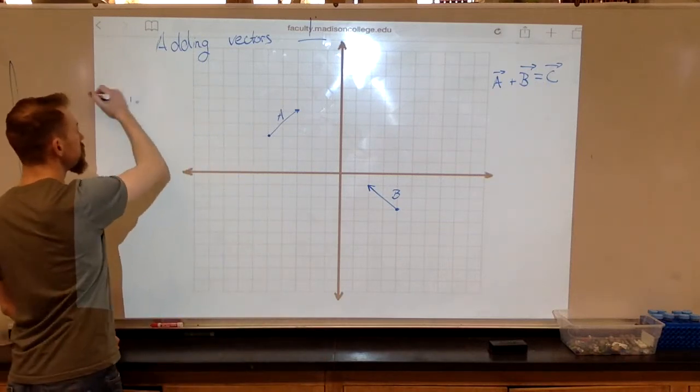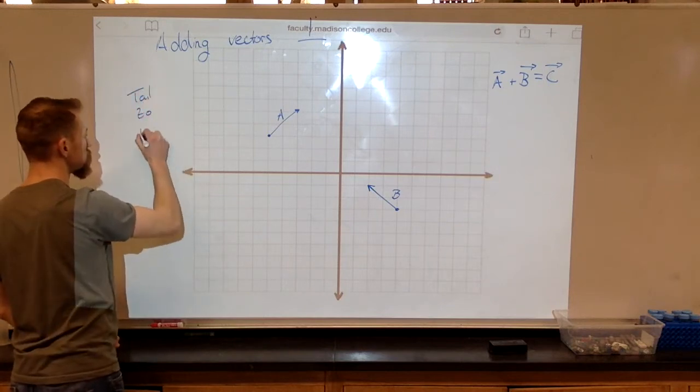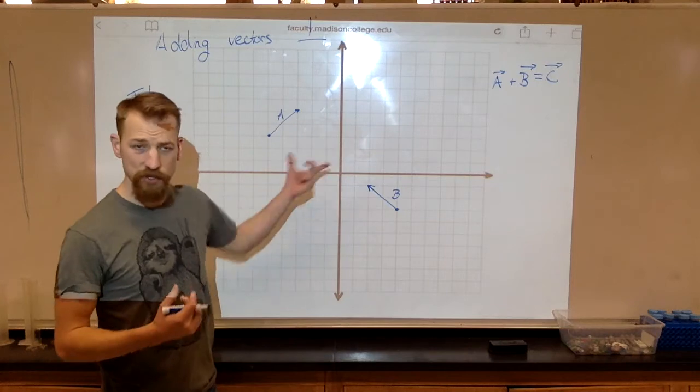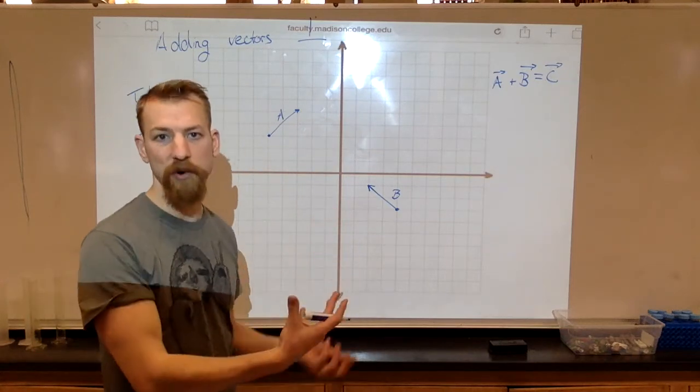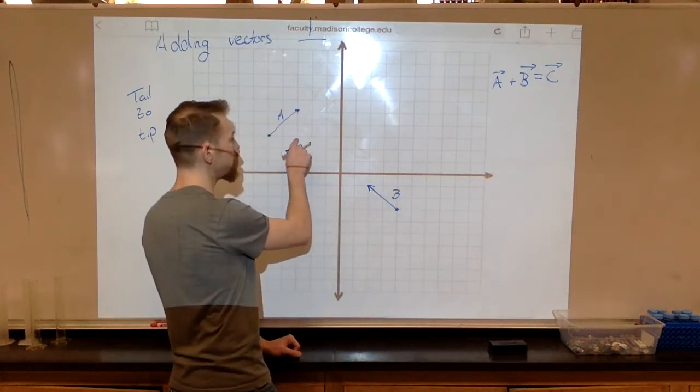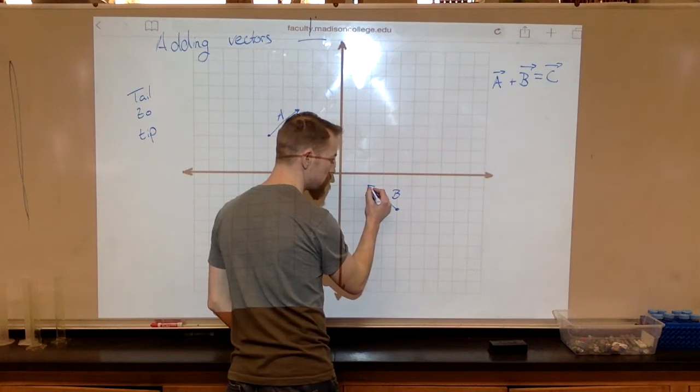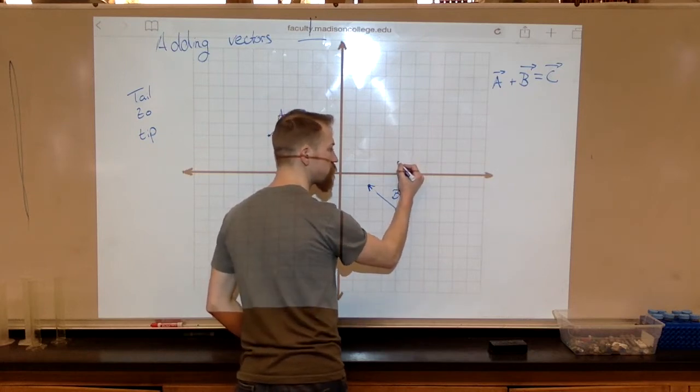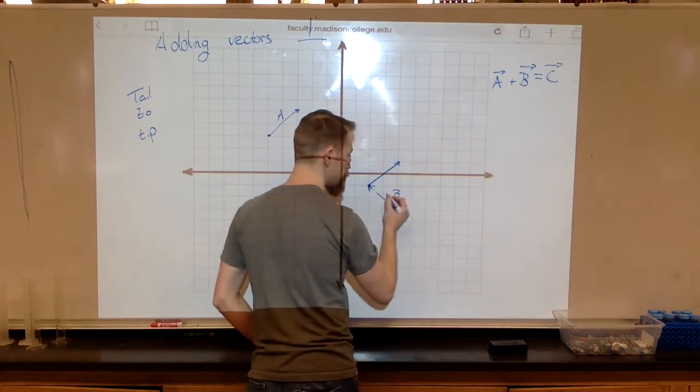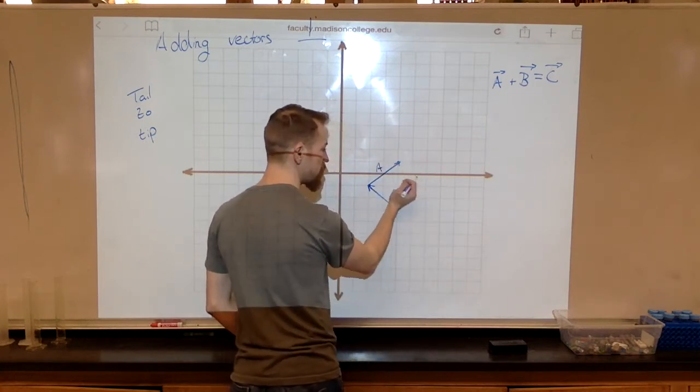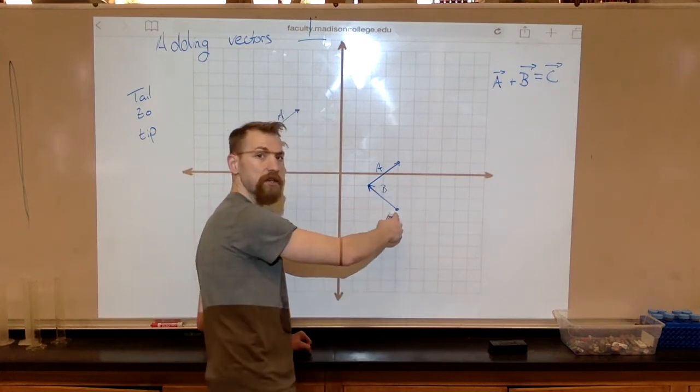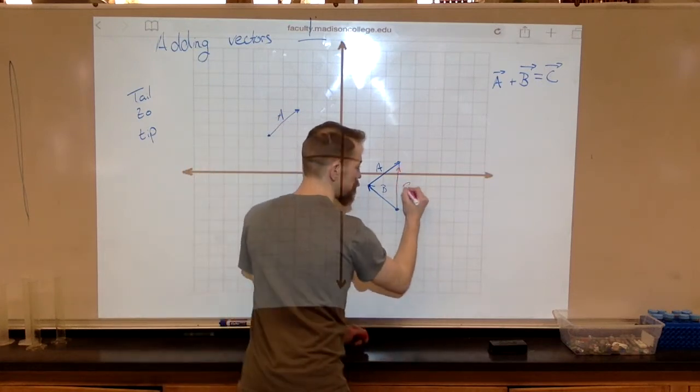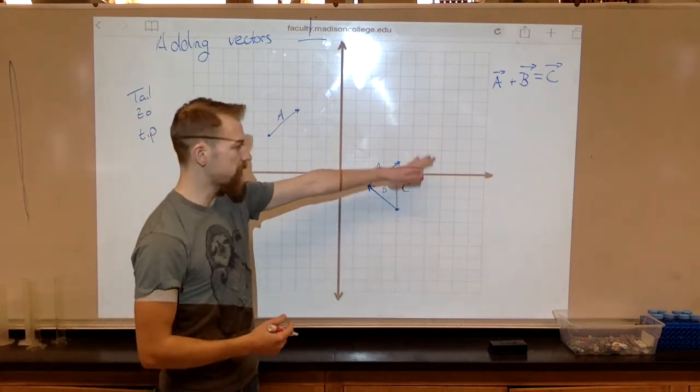And I can move these vectors anywhere. So let's use the tail-to-tip method. And I'm going to again move A to B. It doesn't matter which vectors I move. So here, this is over two, up two, so this is starting here, tail-to-tip, over two in the positive direction, up two in the positive direction. So this is vector B, this is vector A, and our resulting vector will be where we started to where we finished. Our resulting vector is this here. So this would be our C.